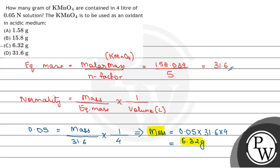We can say that the number of grams of KMnO4 that are contained in a 4 liter solution of 0.05 normality is option number C, which is 6.32 grams. I hope you understood it well, thank you and best of luck.